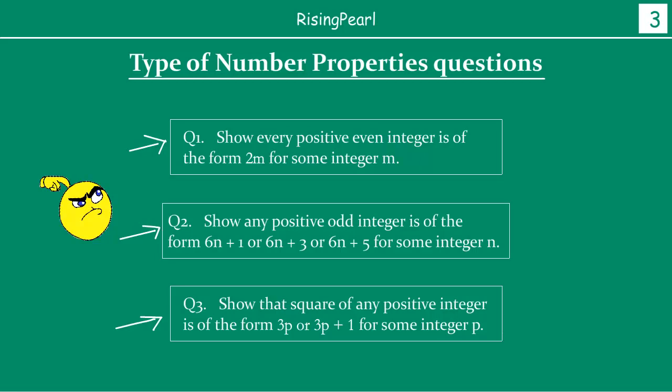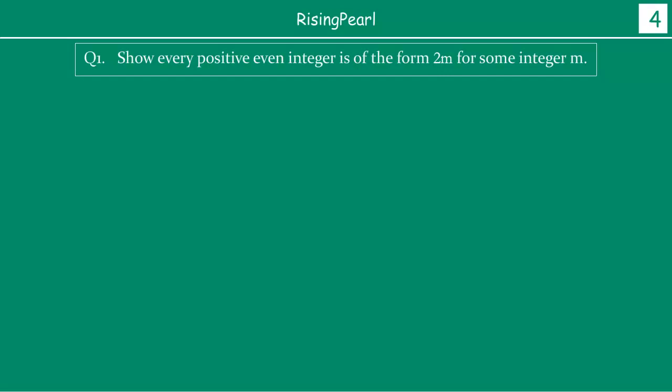Think about a few months down the year when you have learned polynomials, trigonometry, arithmetic progression, and so on. At that time, if you get a question like this, it is very difficult to relate these questions to Euclid's division lemma. And even if you understand that this question is related to Euclid's division lemma, how do we actually solve it? That is where I am going to guide you. So let's take a look at the first question.